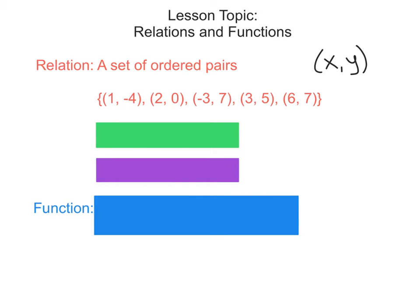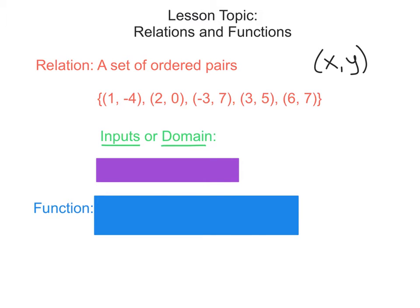There's some vocabulary that goes along with those X and Y values. The X values, for any coordinate pair, are called the inputs, and the set of inputs is called the domain. So if we were to list all of our X values here: 1, negative 3, 3, and 6 — that is our set of inputs, or the domain for this set of ordered pairs.